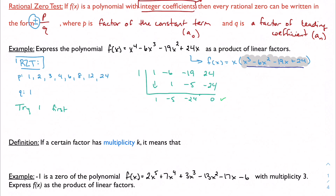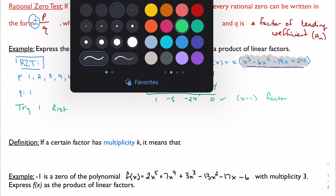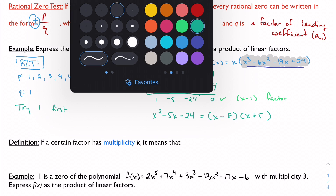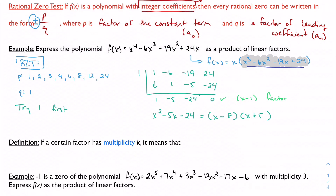So x − 1 is confirmed as a factor, and then I need to factor the quotient, which is x² − 5x − 24. That factors into (x − 8)(x + 3). My fully factored final answer is x · (x − 1) · (x − 8) · (x + 3) — the x came from factoring out at the start, x − 1 from synthetic division, and x − 8 and x + 3 from factoring the quotient.